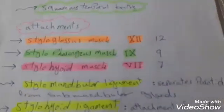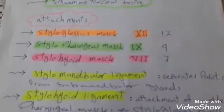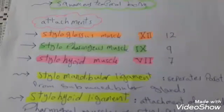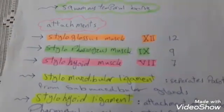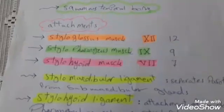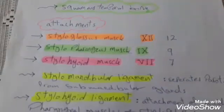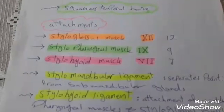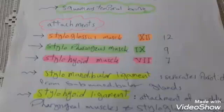There are five structures attached to the styloid process: three muscles and two ligaments. The first muscle is the styloglossus muscle innervated by the 12th cranial nerve, stylopharyngeus muscle innervated by the 9th cranial nerve, and the stylohyoid muscle innervated by the 7th cranial nerve.